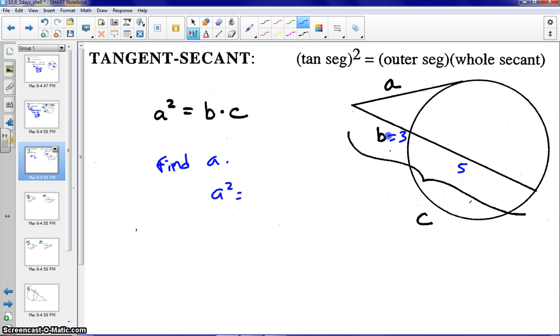So in other words, A squared equals the outer times the whole part. So if we square root both sides, we get A equals square root of 24. And as always, we want to write that in simplified radical form. So A would be equal to 2 square root 6. So those are the three power theorems that we're going to be working with.